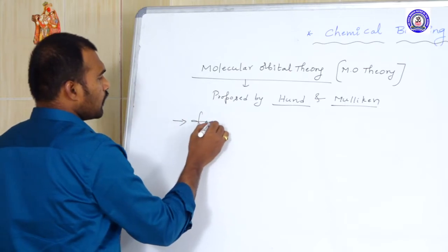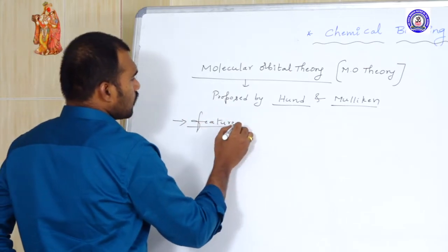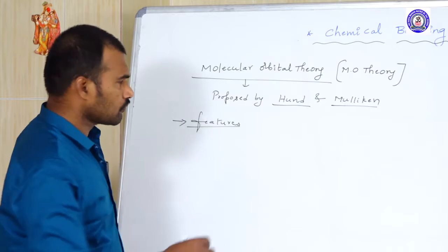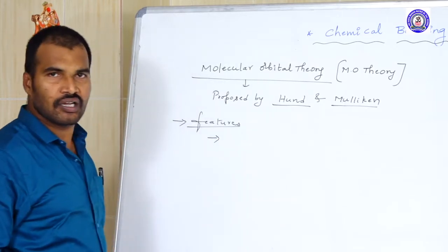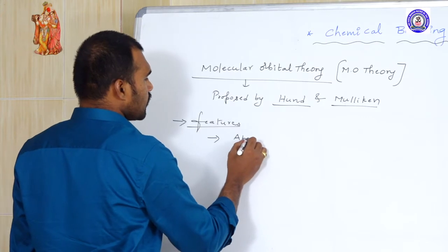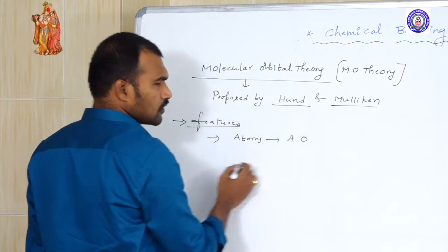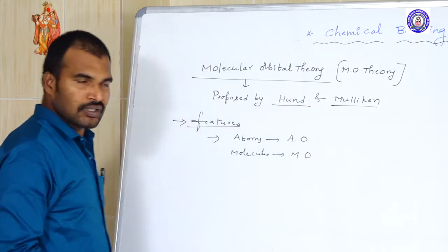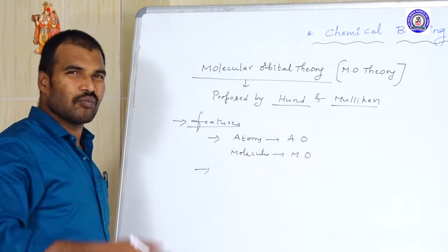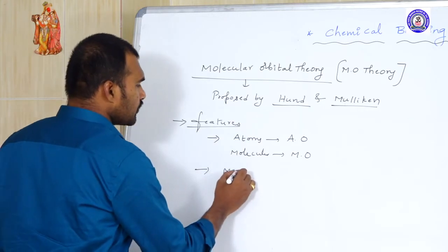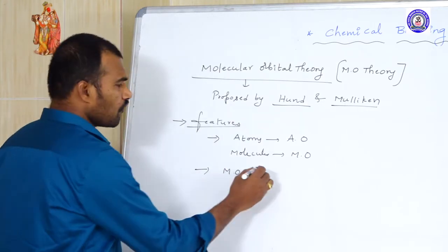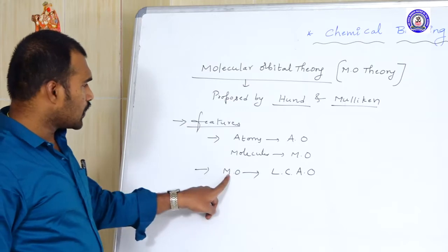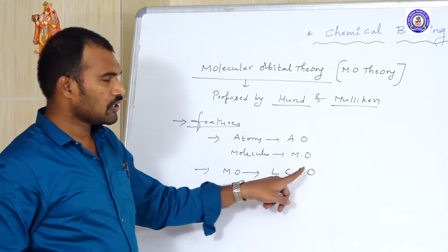What are the features of this Molecular Orbital Theory? According to MO theory, just as atomic orbitals are present in atoms, molecular orbitals are present within molecules. That means atoms have atomic orbitals, and similarly molecules have molecular orbitals. Molecular orbitals are orbitals formed by the linear combination of atomic orbitals (LCAO).